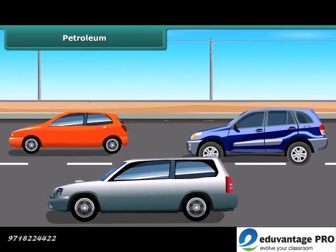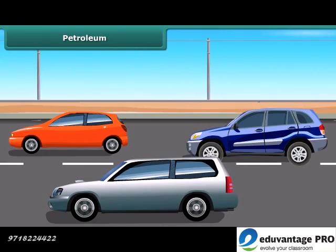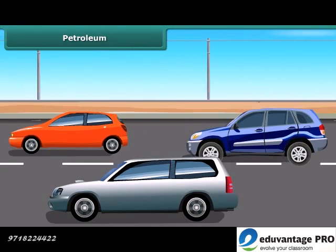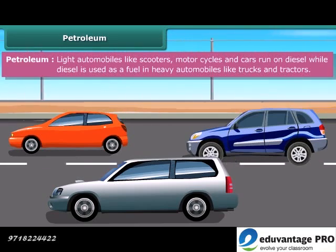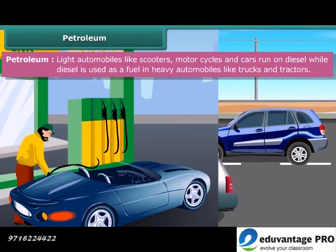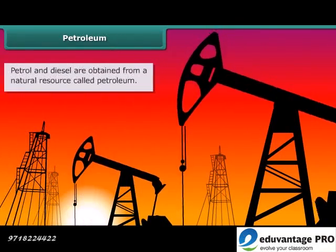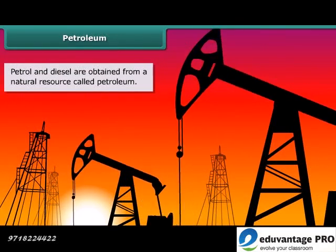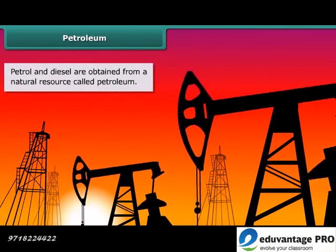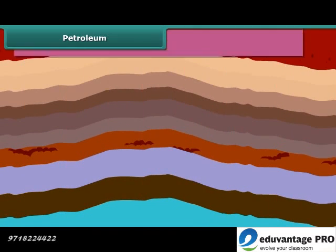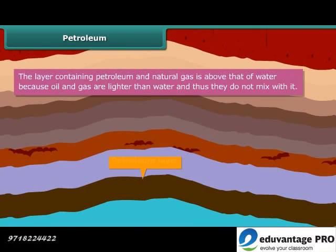Friends, most luxury cars and vehicles run on either petrol, diesel, or compressed natural gas, also known as CNG. Petrol and diesel are obtained from a natural resource called petroleum. Petroleum and natural gas deposits exist as a layer above the water layer underground.